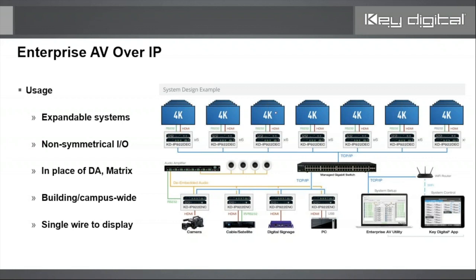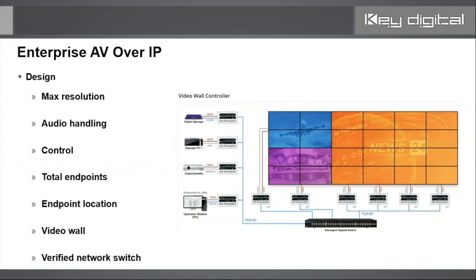If it were one source to 42 displays, you'd be using it in place of a distribution amp. Four sources and one display — it's replacing a switcher. So essentially AV over IP is replacing all traditional HDMI signal management product categories because it's all network based. You could connect fiber from one network switch to another to interconnect buildings or floors, and all you need is a single Cat wire to each display.